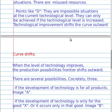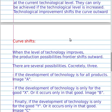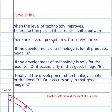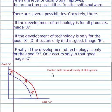If the development of technology is for all products, we have Image A. The frontier shifts outward equally at all its points. As you can see, both in Good Y and in Good X, the frontier shifts outward.